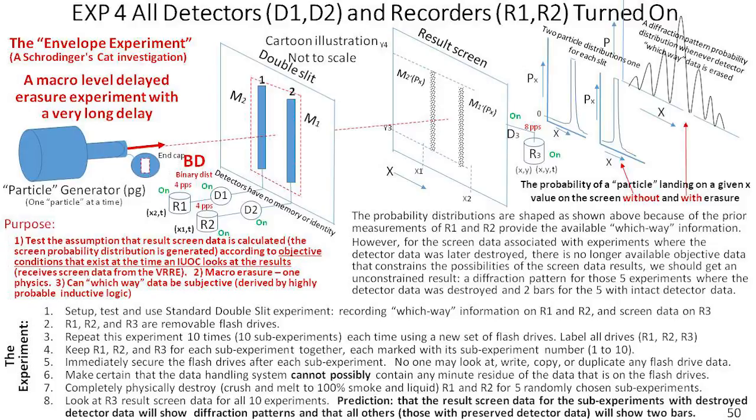With detectors D1 and D2 and both recorders R1 and R2 turned on, we'll get which-way information, resulting in a particle pattern with two bars. Let's say I'm going to run this experiment 20 times.